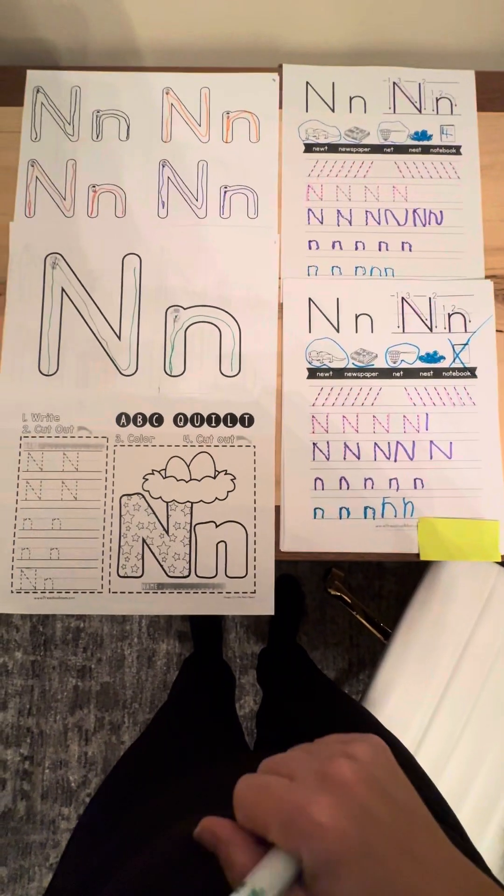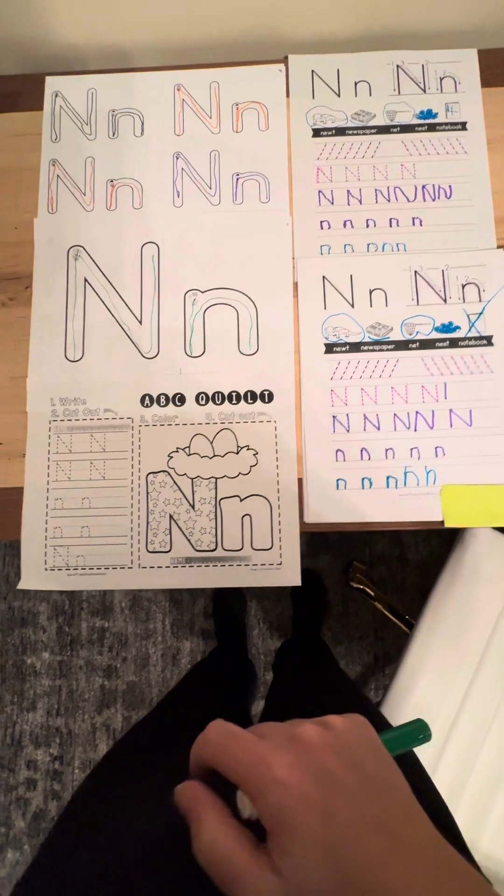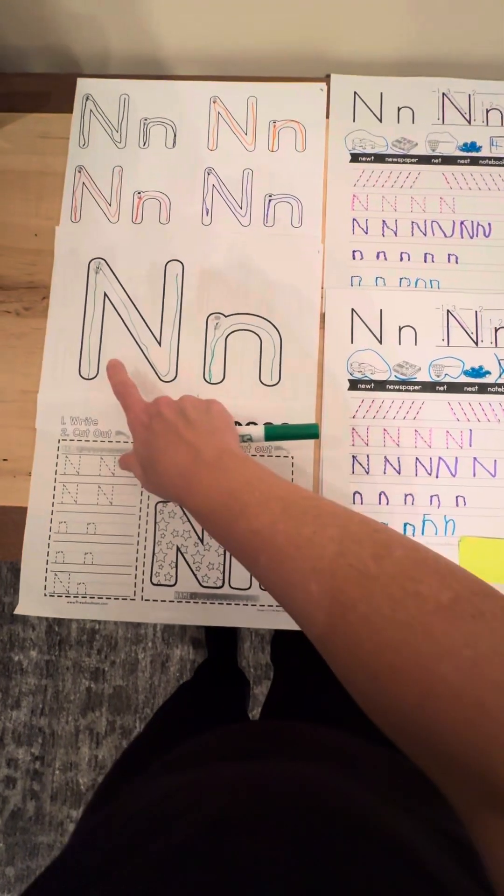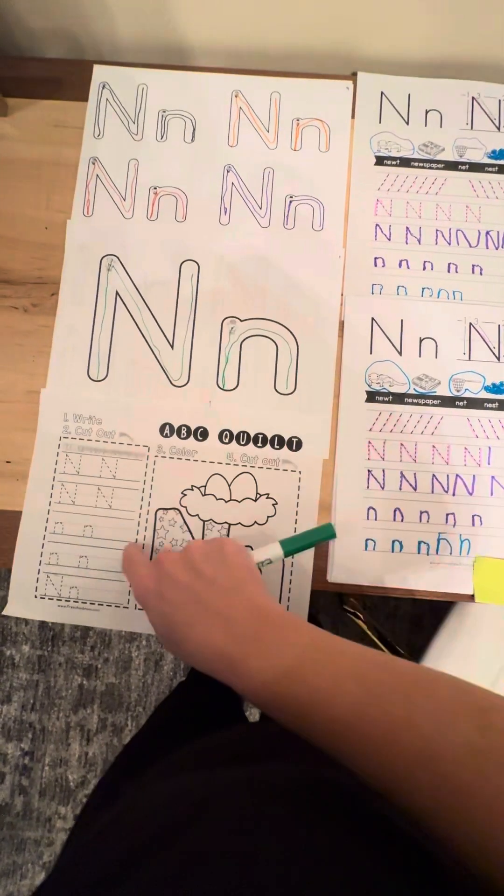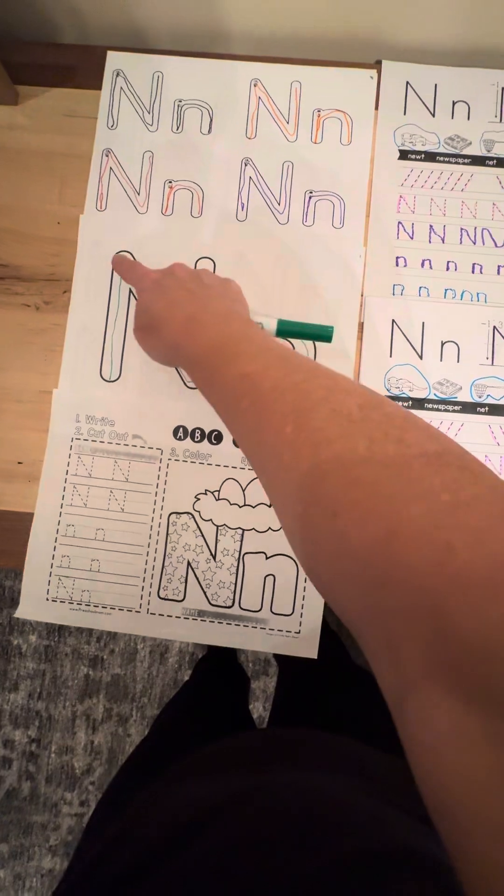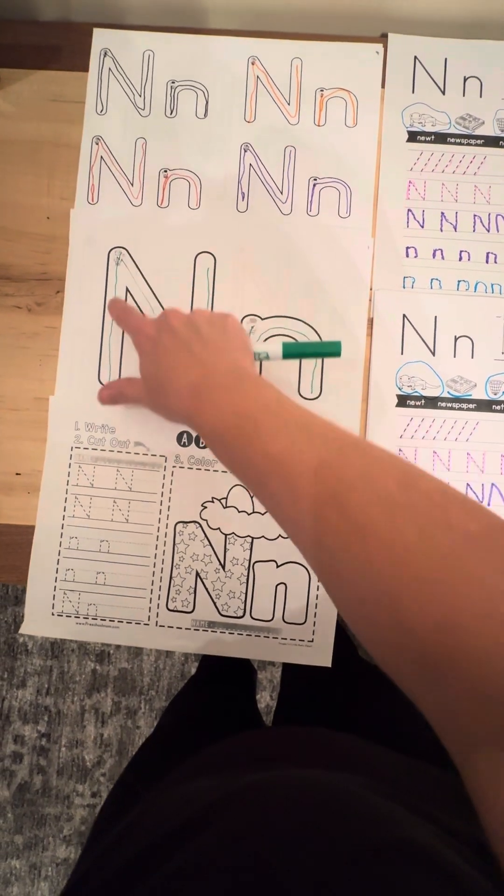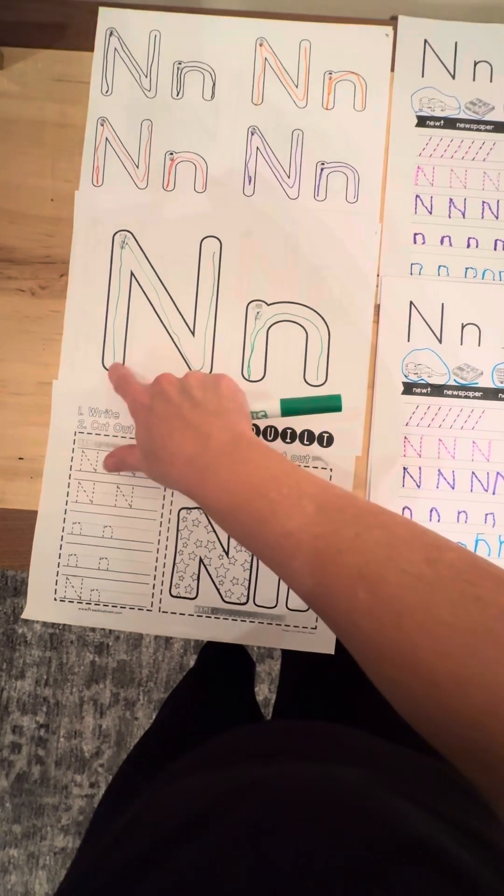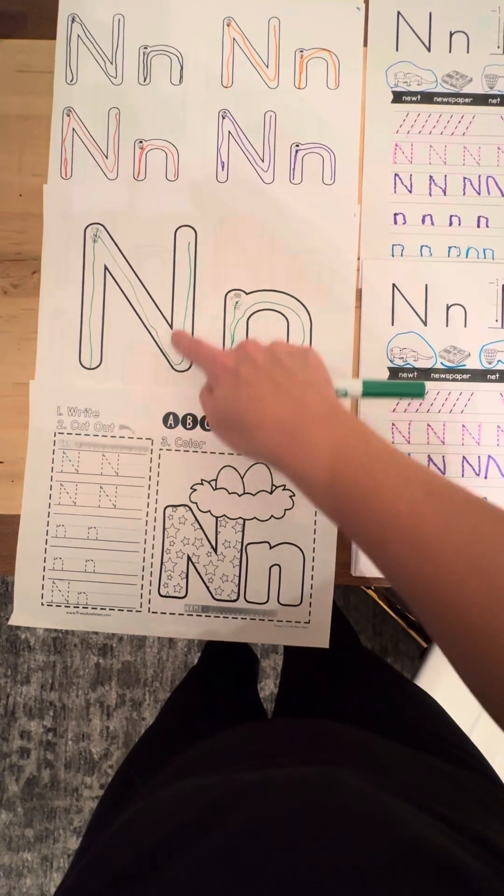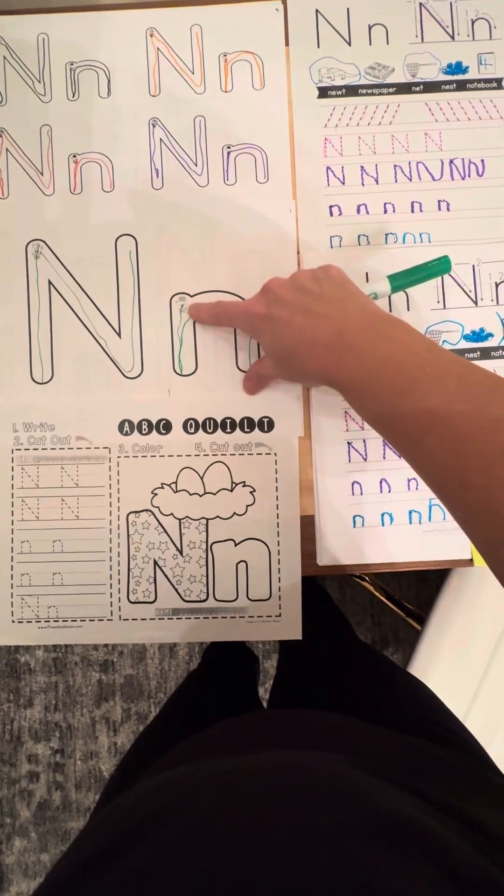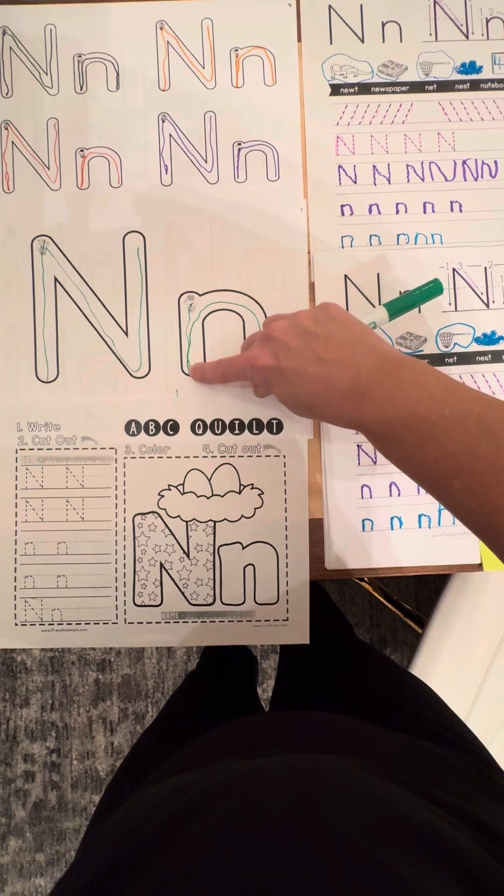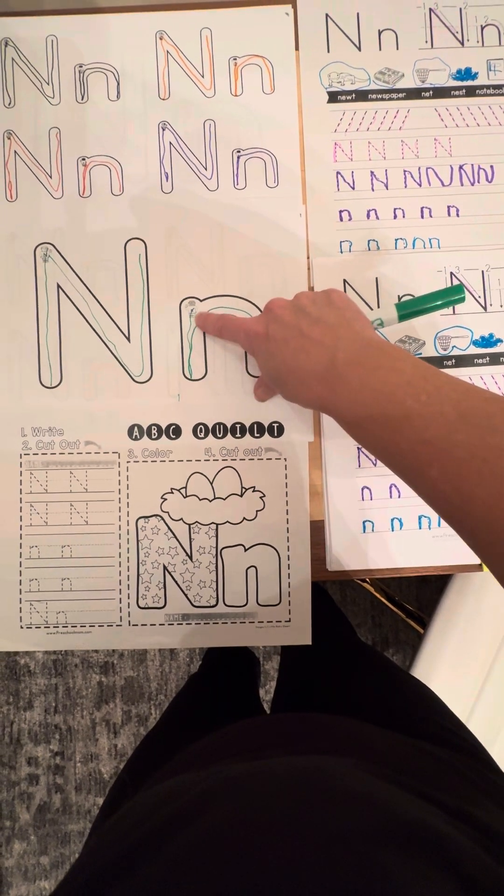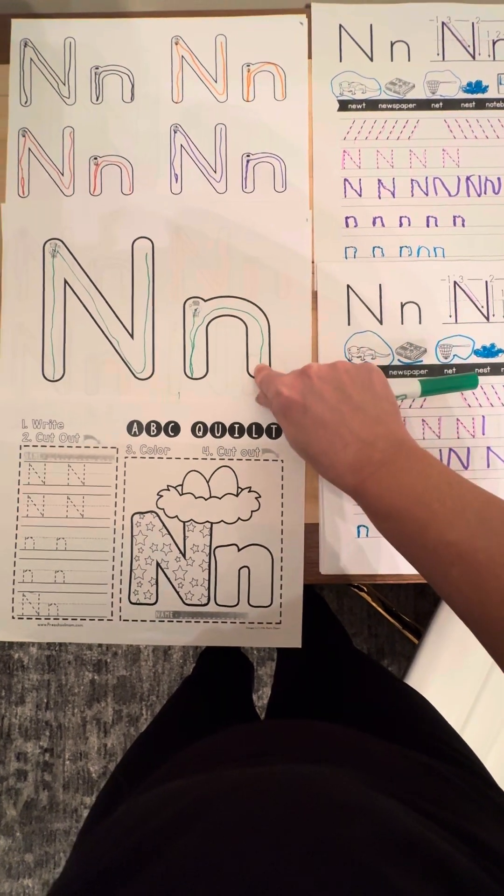We started on the letter N this week. The way we started our week was learning about N. We started with these two pages where we did just the formation of the N, which we say is straight down, and then we go down the slide, up the slide. And then we start here where you see little N, we go down and retrace and then go up and make the rainbow.